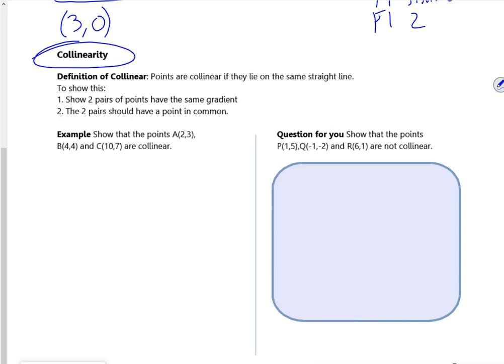Right, collinearity is really important next year when we do vectors. But the idea is that all three points are on the same line. So I've got (2,3), (4,4), (10,7). So what I want to see is if 2,3, 4,4 and 10,7 are on the same line.